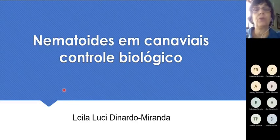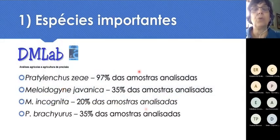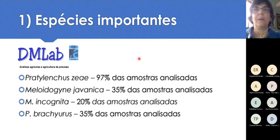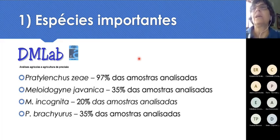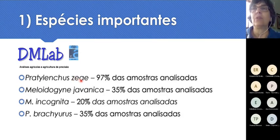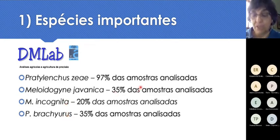Vamos falar um pouquinho sobre controle biológico de nematóides. Antes de falar propriamente do controle, eu gostaria de ressaltar quais são as espécies de nematóides importantes para a cana. Quando nós mandamos analisar uma amostra de canavial, principalmente em laboratórios de faculdade, vem uma série de nematóides no laudo. E tudo aquilo é importante? Não. Essas são as quatro espécies mais importantes para a cana de açúcar no Brasil e também para o mundo todo. Pratylenchus é muito frequente nas nossas amostras, depois vem Meloidogyne javanica, Meloidogyne incognita e Pratylenchus brachyurus, em ordem de importância para a cana de açúcar.